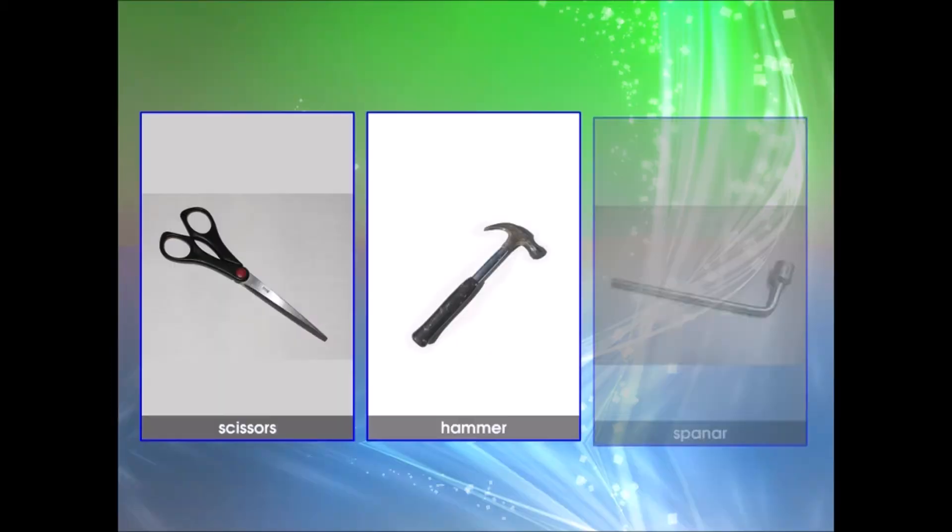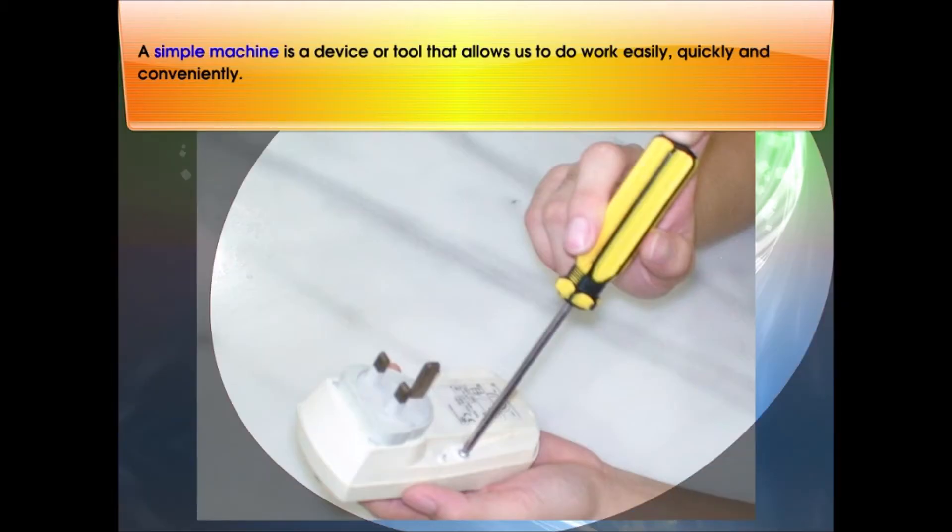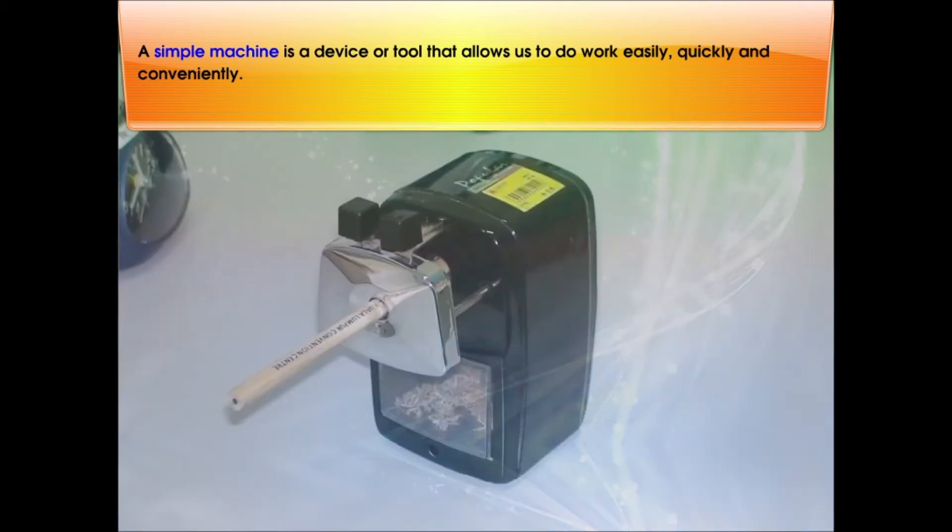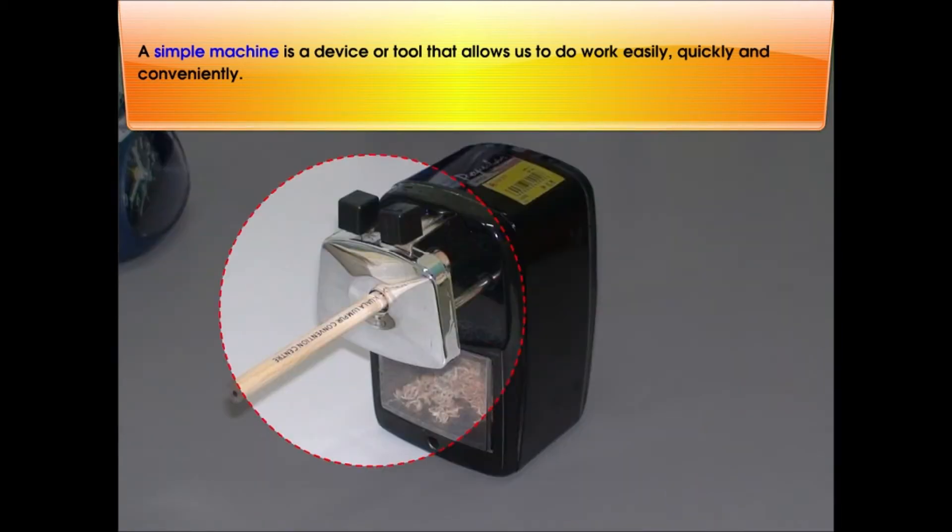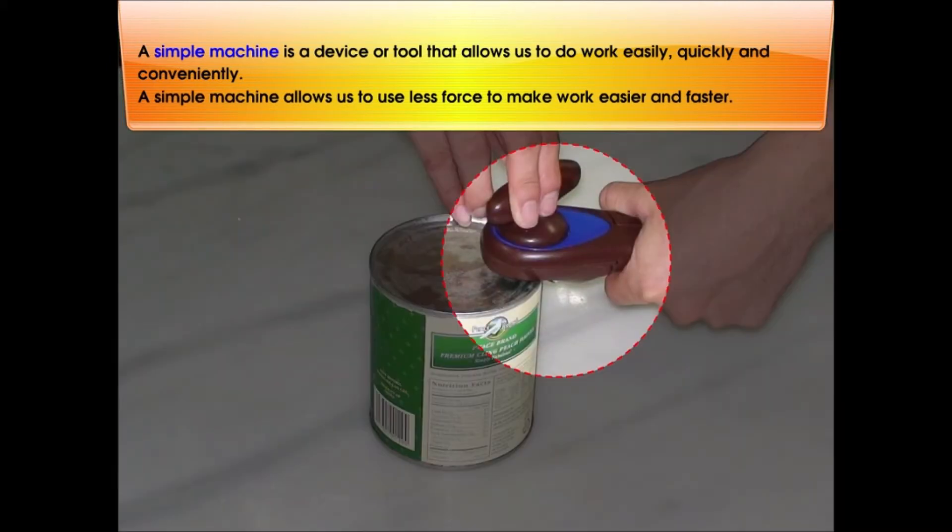What is a simple machine? What is its benefit? A simple machine is a device or tool that allows us to do work easily, quickly, and conveniently. A simple machine allows us to use less force to make work easier and faster.